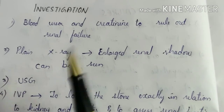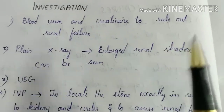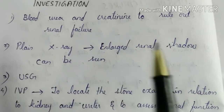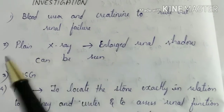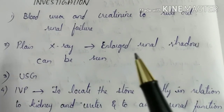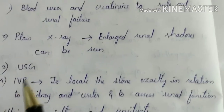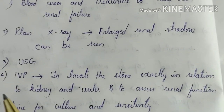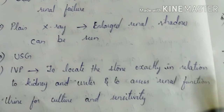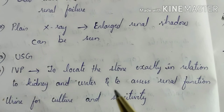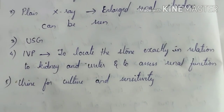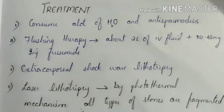Investigations: blood urea and creatinine tests are performed to assess kidney function. Plain X-ray is done, though many urinary calculi are not visible on X-ray except for uric acid stones; an enlarged renal shadow may be seen. USG is performed. IVP (intravenous pyelogram) is done to locate the stone exactly in relation to the kidney and ureter and to assess renal function. Urine culture and sensitivity testing is done to check for infections.